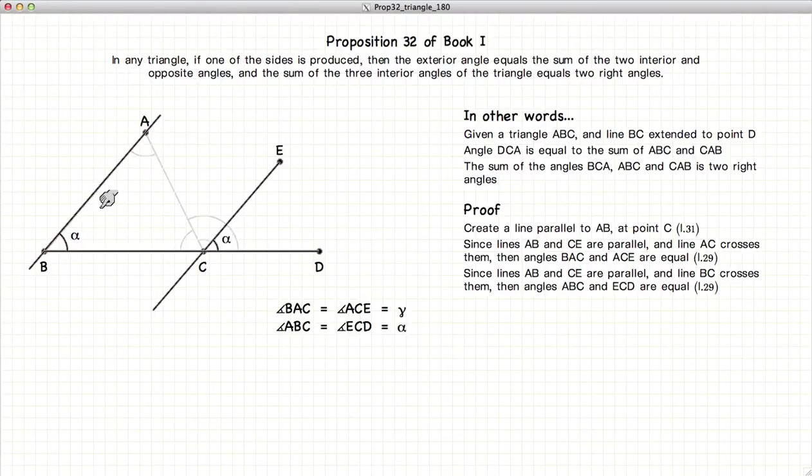Now, if we look again at the two parallel lines of BA and CE, the interior and exterior angles are also equal. So ABC is equal to ECD, which is equal to beta.